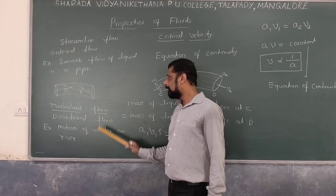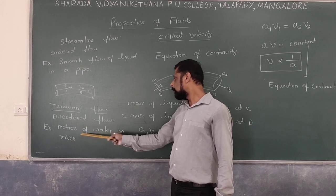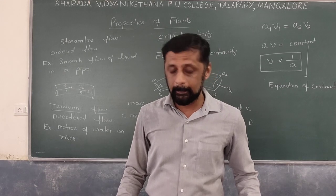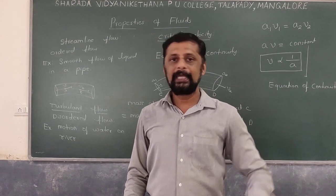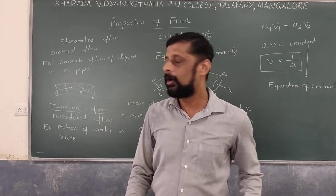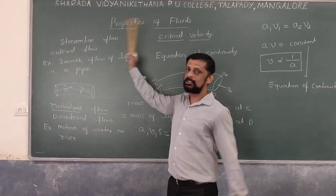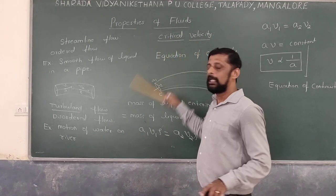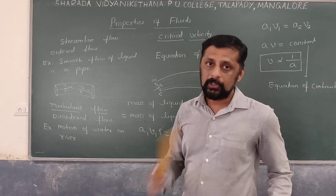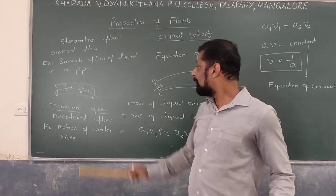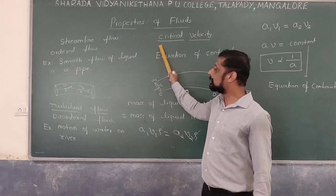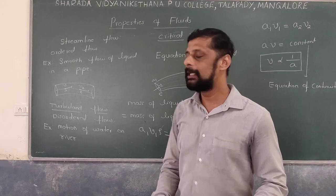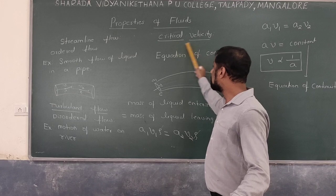Turbulent flow is a disordered flow where different particles possess different velocities at a particular point. In turbulent flow the velocity is not small — the liquid moves with higher velocity. Example: motion of water in a river, or switching on a tap. A streamline is a straight or curved path along which liquid flows, such that the tangent at any point indicates the direction of flow. The velocity above which flow becomes turbulent is called critical velocity.